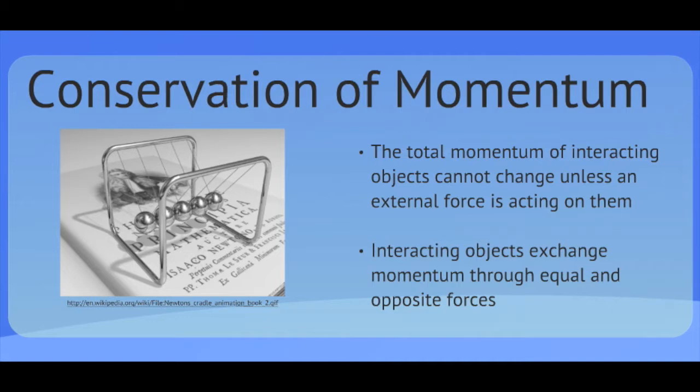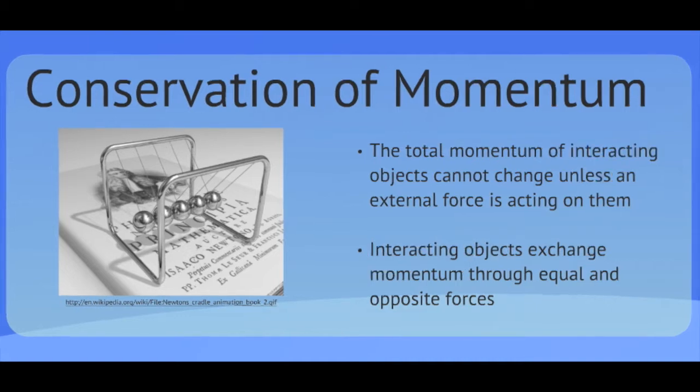Conservation of momentum says that the total momentum of interacting objects cannot change unless there is an external force. This is a direct consequence of Newton's first and third laws. So interacting objects will transfer momentum between each other through equal and opposite forces.